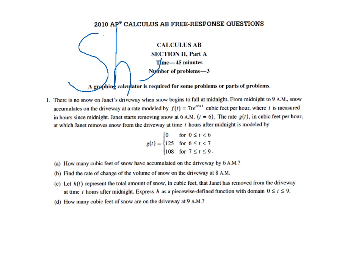And then we have four questions. How many cubic feet of snow have accumulated on the driveway by 6 a.m.? Find the rate of change of the volume of snow on the driveway at 8 a.m. Let h(t) represent the total amount of snow in cubic feet that Janet has removed from the driveway at time t hours after midnight. Express h as a piecewise defined function with domain 0 less than or equal to t less than or equal to 9. How many cubic feet of snow are on the driveway at 9 a.m.?